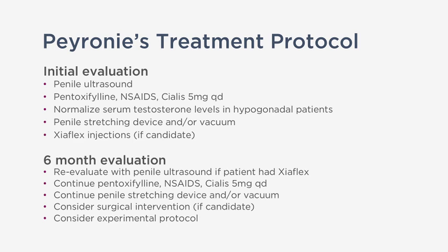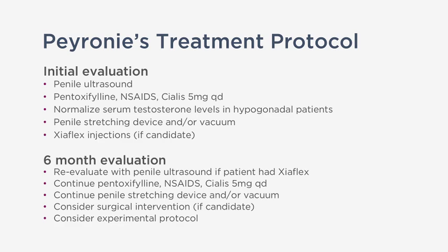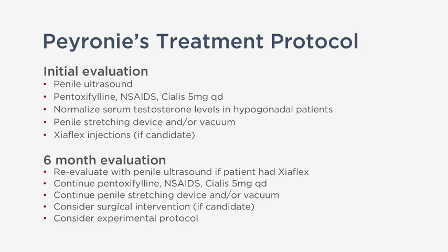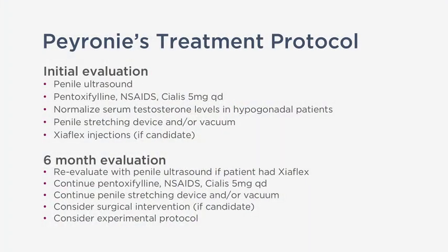When patients present with Peyronie's disease to my office, I have a protocol. The initial evaluation involves a penile ultrasound to assess the curvature, penile plaque, and penile blood flow. We start certain medications: pentoxifylline (off-label, with some supporting case reports), anti-inflammatories, and daily Cialis. We also check serum testosterone levels, as I believe low testosterone can contribute to Peyronie's disease, and may consider testosterone therapy in symptomatic patients with low testosterone. We use penile stretching devices or a vacuum erection device, and in appropriate candidates, we start Xiaflex injections. After six months, we re-evaluate with another penile ultrasound and may consider surgical options or experimental protocols at Baylor College of Medicine.